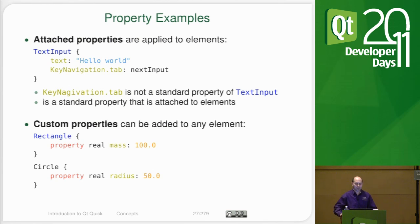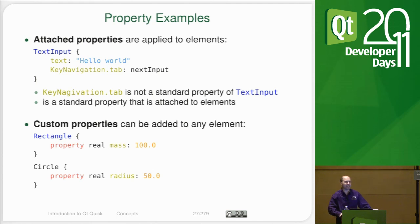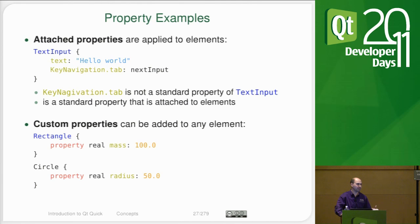There are also things called attached properties that look a lot like grouped properties, but these only appear under certain conditions. For example, in the text input we have a key navigation property. This defines what happens to focus when tab, back tab, left, right, up, and down are pressed. That's going to vary widely per application and per keypad — how do you move from one element to the other? The key navigation element is going to help you do that, and it actually turns out to be a lot easier to write and maintain than it is to do tab ordering in C++.